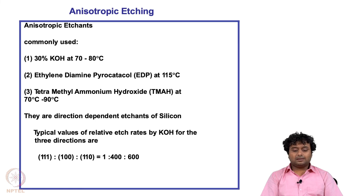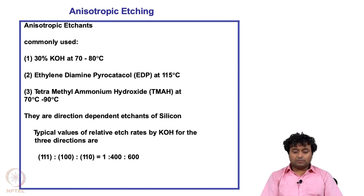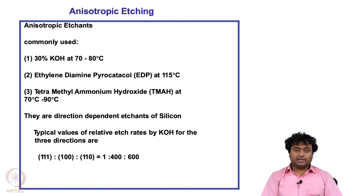For example, if we etch for 1 hour and get 1 nanometer for the 111 plane, then for 100 and 110 we will get 400 nanometers and 600 nanometers respectively. An important point is that even though the etching rate is very small, the 111 plane still gets etched — it is not zero.